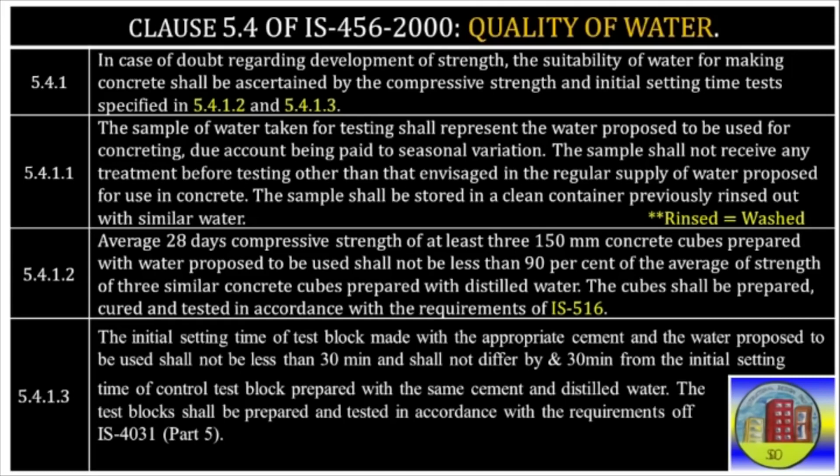5.4.1.2: The average 28-day compressive strength of at least three 150 mm concrete cubes prepared with the water proposed to be used shall not be less than 90% of the average strength of three similar concrete cubes prepared with distilled water. The cubes shall be prepared, cured, and tested in accordance with the requirements of IS 516.